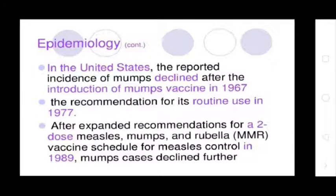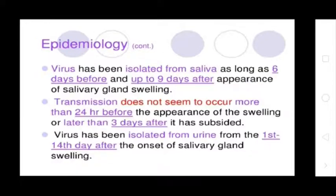In the United States, the reported incidence of mumps declined following the recommendation of routine vaccine use in 1977. After the expanded recommendation of two doses of the measles-mumps-rubella vaccine scheduled for measles control in 1989, mumps cases declined further.